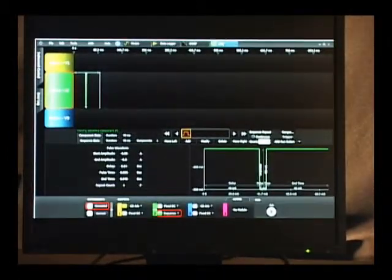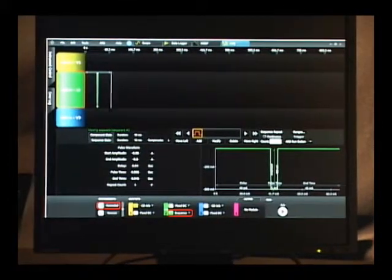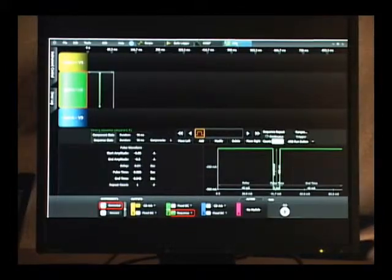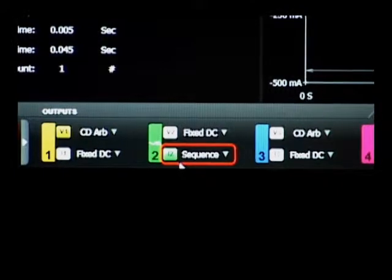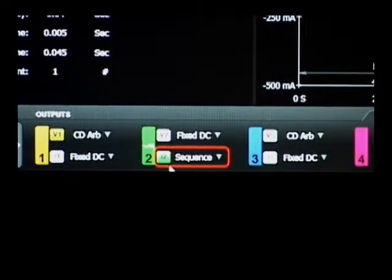Here we are able to set up ARB functions on the outputs for this kind of application. Down at the bottom here I'm applying the ARB sequence to output 2 current to be able to pull a pulse load current from our device under test.